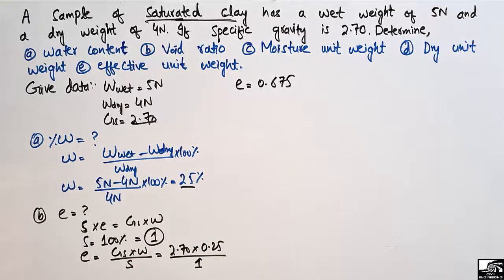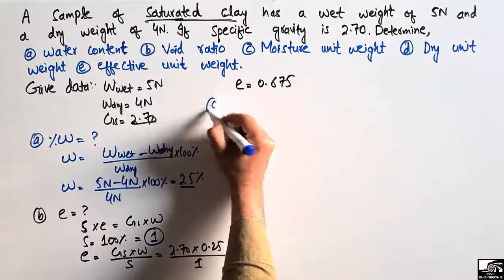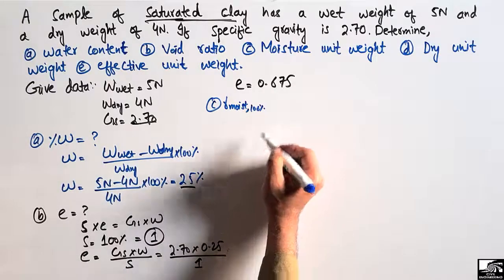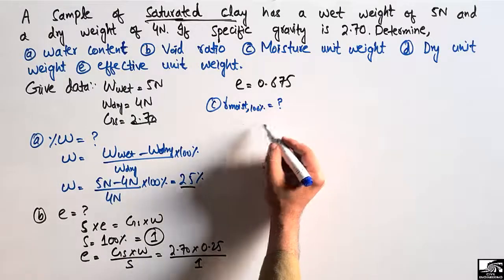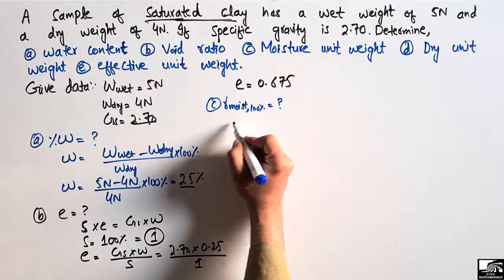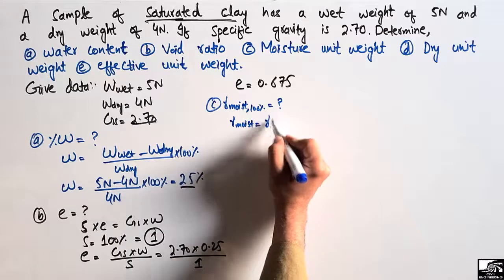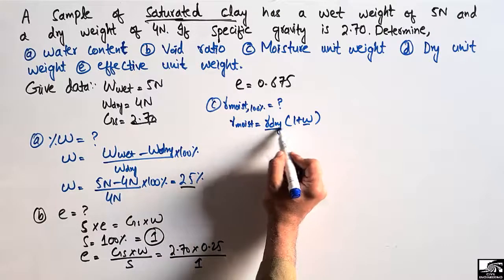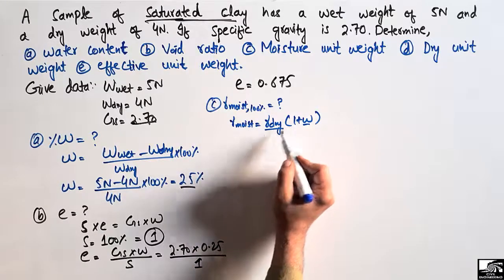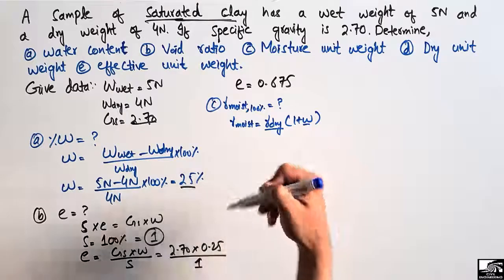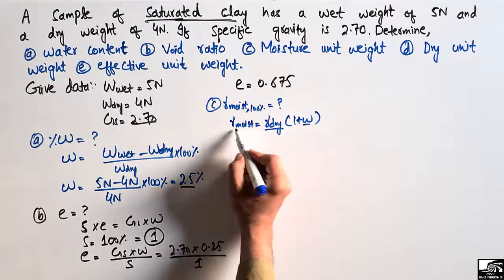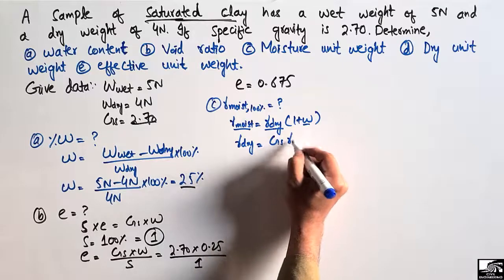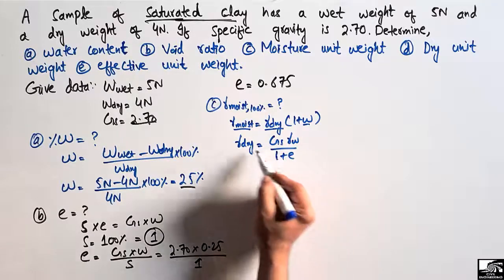Now we need to find the moisture unit weight (gamma moisture) at 100% saturation. We know that gamma moisture = gamma dry × (1 + W). However, gamma dry is also unknown, so we cannot directly use this equation. We need a trick to find gamma moisture using a known formula.